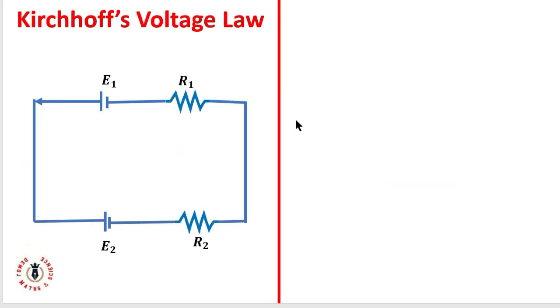Kirchhoff's Voltage Law tells us that in a closed loop, the algebraic sum of the voltages - the algebraic sum of this voltage and this voltage - is the same thing as the sum of the voltage drop across the loop. The voltage drops are experienced across the resistors while we have the voltage supplied from the voltage sources.